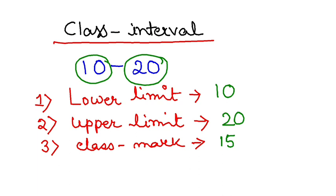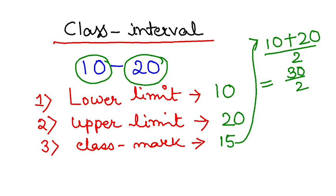This is how you find the class mark. If you want the midpoint, the lower limit plus the upper limit divided by 2. So 10 plus 20 by 2, I'll get 30 by 2, which is 15. This is how you find class mark.